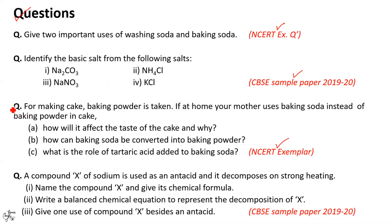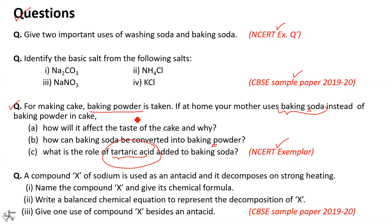Let me provide an answer to one of the questions: for making cake, baking powder is taken. If at home your mother uses baking soda instead of baking powder in a cake, how will it affect the taste of the cake and why? If your mother uses baking soda — S means single ingredient, only sodium hydrogen carbonate — the cake would taste bitter due to the formation of sodium carbonate. For part B: how can baking soda be converted into baking powder? You can convert baking soda into baking powder by addition of a mild edible acid such as tartaric acid or citric acid. The role of tartaric acid: tartaric acid present in baking powder would neutralize the base sodium carbonate. If this neutralization is not done, then due to the presence of sodium carbonate, the cake would taste bitter, having a soapy or metallic taste.